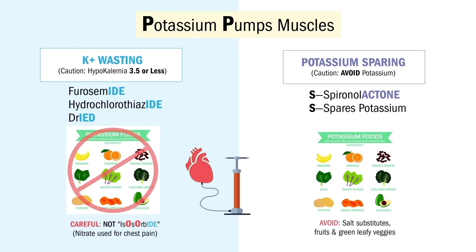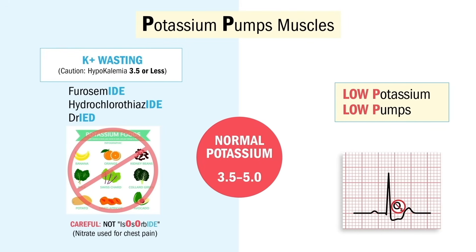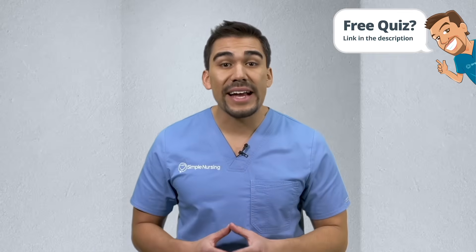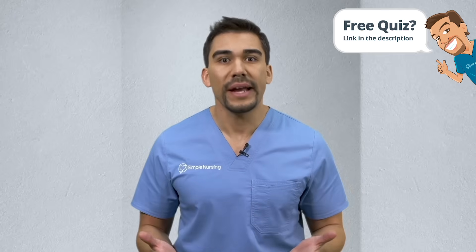NCLEX keywords like muscle spasms and muscle cramps indicate a potassium problem, as do weakness and paresthesias. With potassium wasters that lower potassium, think low pumps — in the heart we get flat T waves, ST depression, and also a U wave.